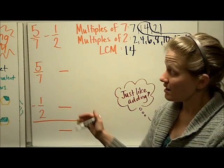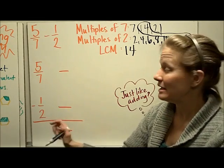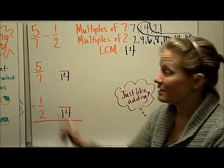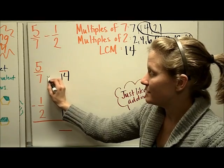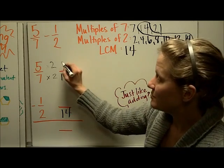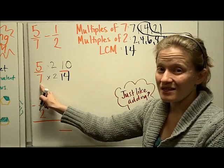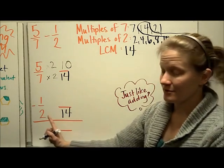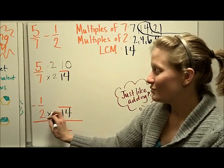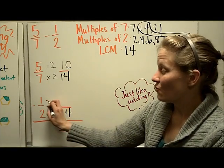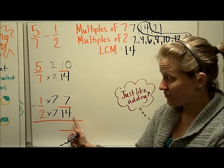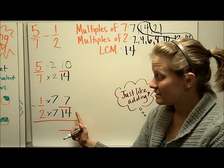Fourteen becomes my denominator for both fractions, and I've rewritten the problem vertically. How did I get from seven to fourteen? I did times two on the denominator, so I do times two on the numerator. Five times two is ten, so five-sevenths is equivalent to ten-fourteenths. For the bottom fraction, two times seven is fourteen, so one times seven is seven. We still have a one-half relationship — seven is half of fourteen.